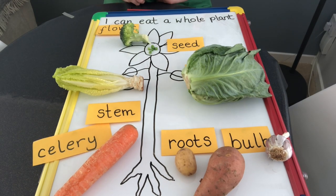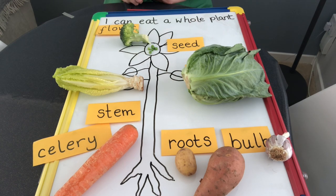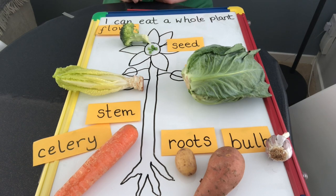Now at home I'd like you to either have a look in the fridge and have a think, or you can use the pictures that I've provided of different vegetables. See if you can sort out the different parts of a plant that you would eat, and make sure that they're ones that you like and you'd have a go at eating them.